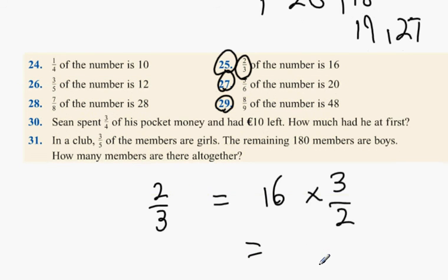Now, what happens when you multiply by 3 and divide by 2? What do you get? Harry? What is 16 multiplied by 3? It's 48. And 48 divided by 2? It's 24. The number we're looking for is 24.